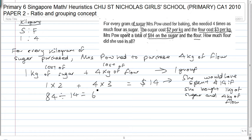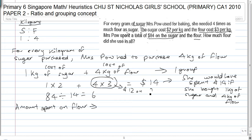How much would she have spent on flour? The amount she spent on flour — remember, for every group she spent $12 on flour. Now we have six groups, so the amount she spent on flour must be 6 multiplied by 12, and that's $72.